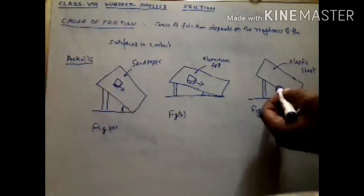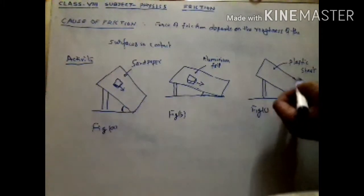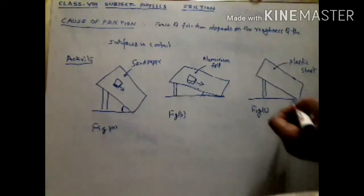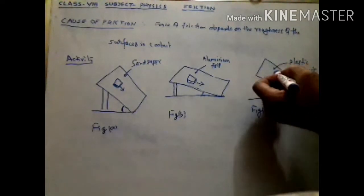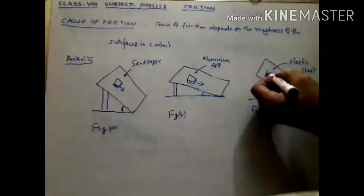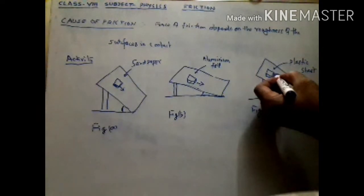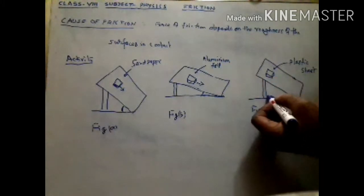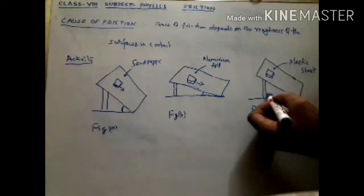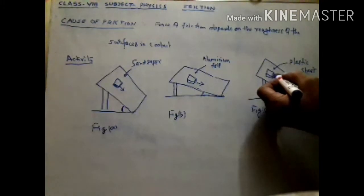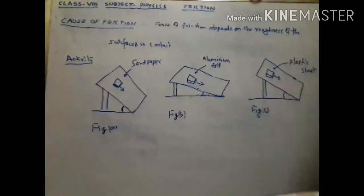In the third figure, which is the wooden tray covered with plastic sheet, we repeat the same activity to observe what is the effect of this nature of surface. We see that for this angle of inclination, or this height, the mesh box starts sliding.